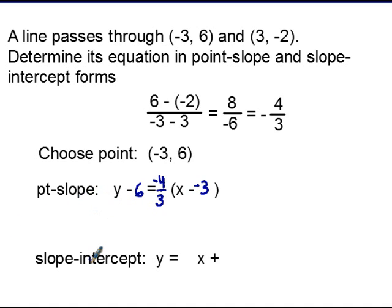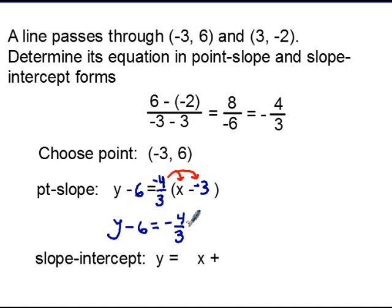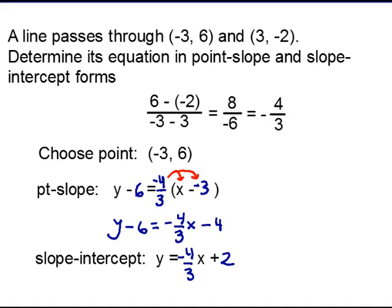From here, you can convert to slope-intercept form pretty easily. Just take this part and distribute to both terms on the inside — times your x, and times what ultimately becomes a positive 3. That yields y minus 6 equals negative 4 thirds x. Since the 3s ultimately eliminate, you get minus 4. Since slope-intercept means you have the slope and the intercept represented — essentially solving for y — take this 6 and add it to both sides. Adding it leaves our slope the same, and adding 6 to negative 4 gives us 2.